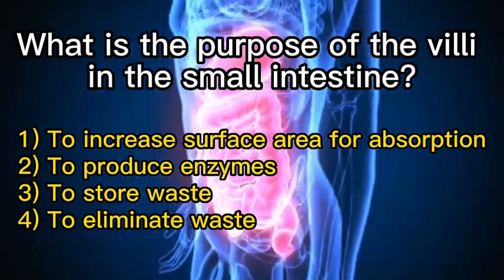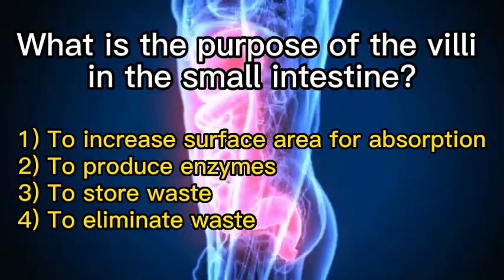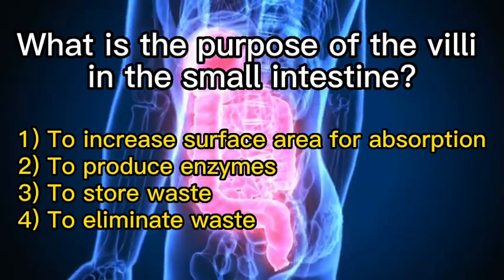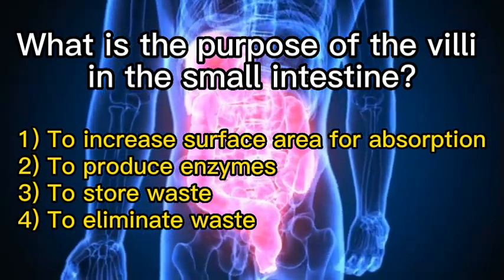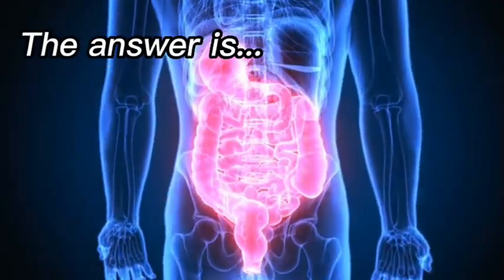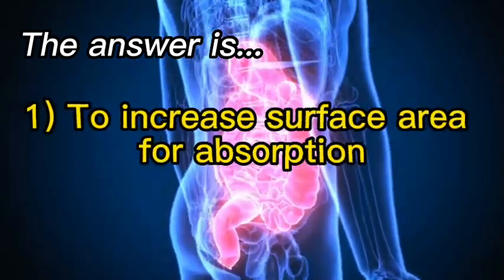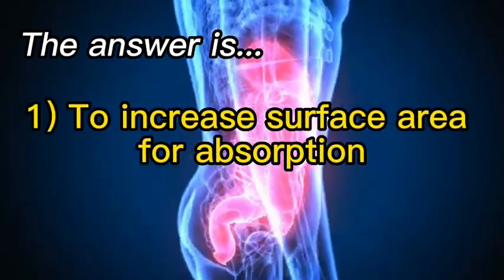What is the purpose of the villi in the small intestine? One: to increase surface area for absorption. Two: to produce enzymes. Three: to store waste. Four: to eliminate waste. The answer is one, to increase surface area for absorption.